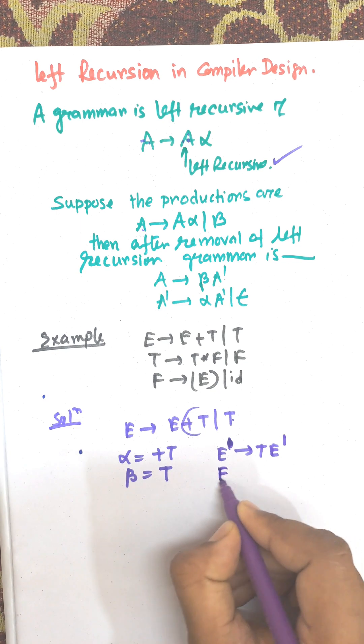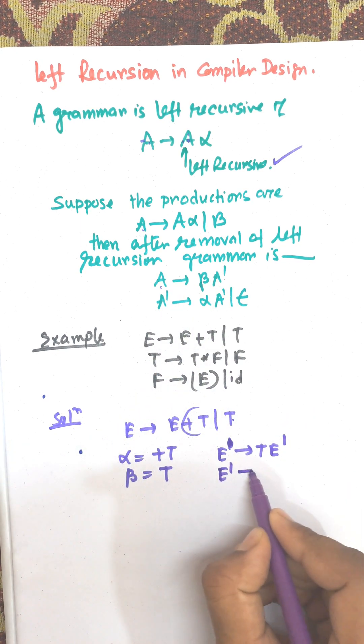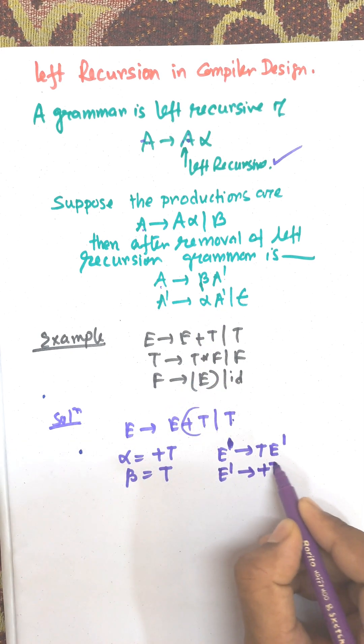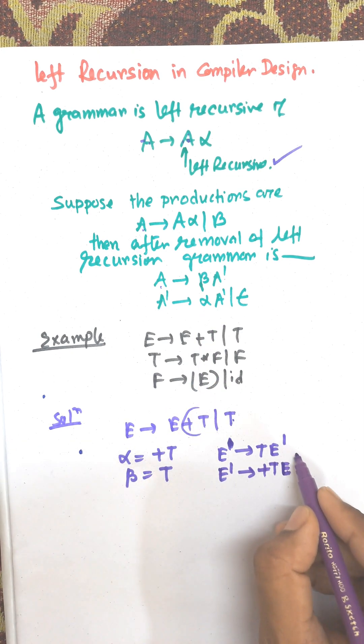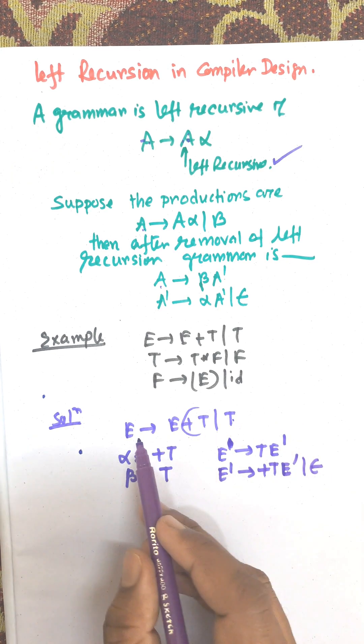And E' from E' to, that is A → βE'. So E → TE', and from E' to alpha E'. Alpha is +TE' and epsilon. So this is the removal of the left recursion.